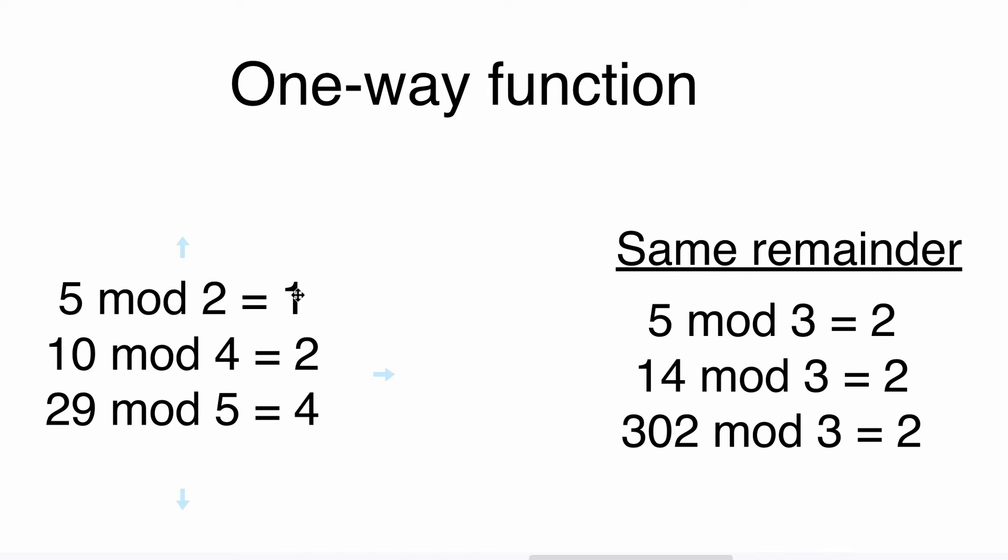Next example: ten mod four. Ten is equal to four plus four plus two, that's why the remainder of division of ten by four is two.